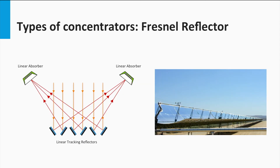Fresnel reflectors are similar, but use thin flat mirrors instead, in order to concentrate sunlight onto the tubes in which the fluid is pumped. Flat mirrors allow more reflection in the same amount of space as parabolic mirrors, reflecting more sunlight and are much cheaper.